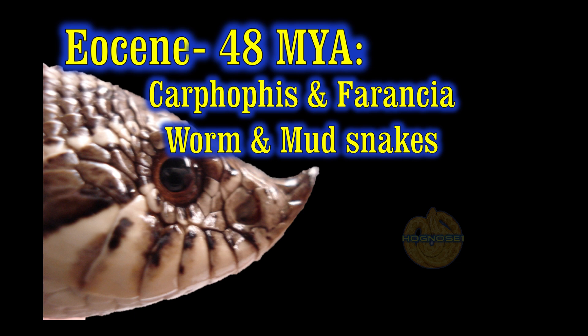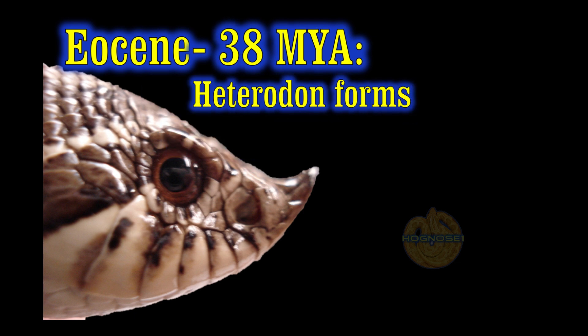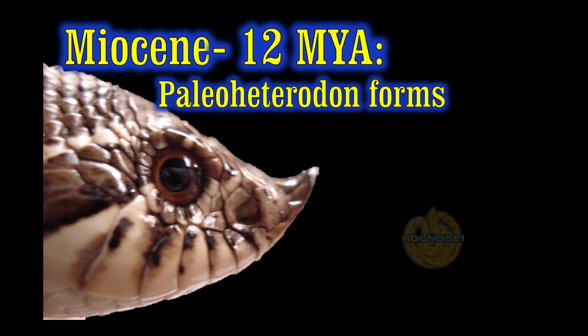As they begin to go through evolutionary changes, 48 million years ago in the Eocene epoch, Carphophia and Farancia — that's the rainbow and mud snakes, and also worm snakes — were believed to be ancestors of nasicus. As you move on into the latter part of the Eocene, heterodon begins to form, and for whatever reason there was a divergence at 38 million years ago. Then as we get into the Miocene epoch, 12 million years ago emerges paleoheterodon, which has been found in the fossil record even within the current Plains or Western Hognose Snake distribution.